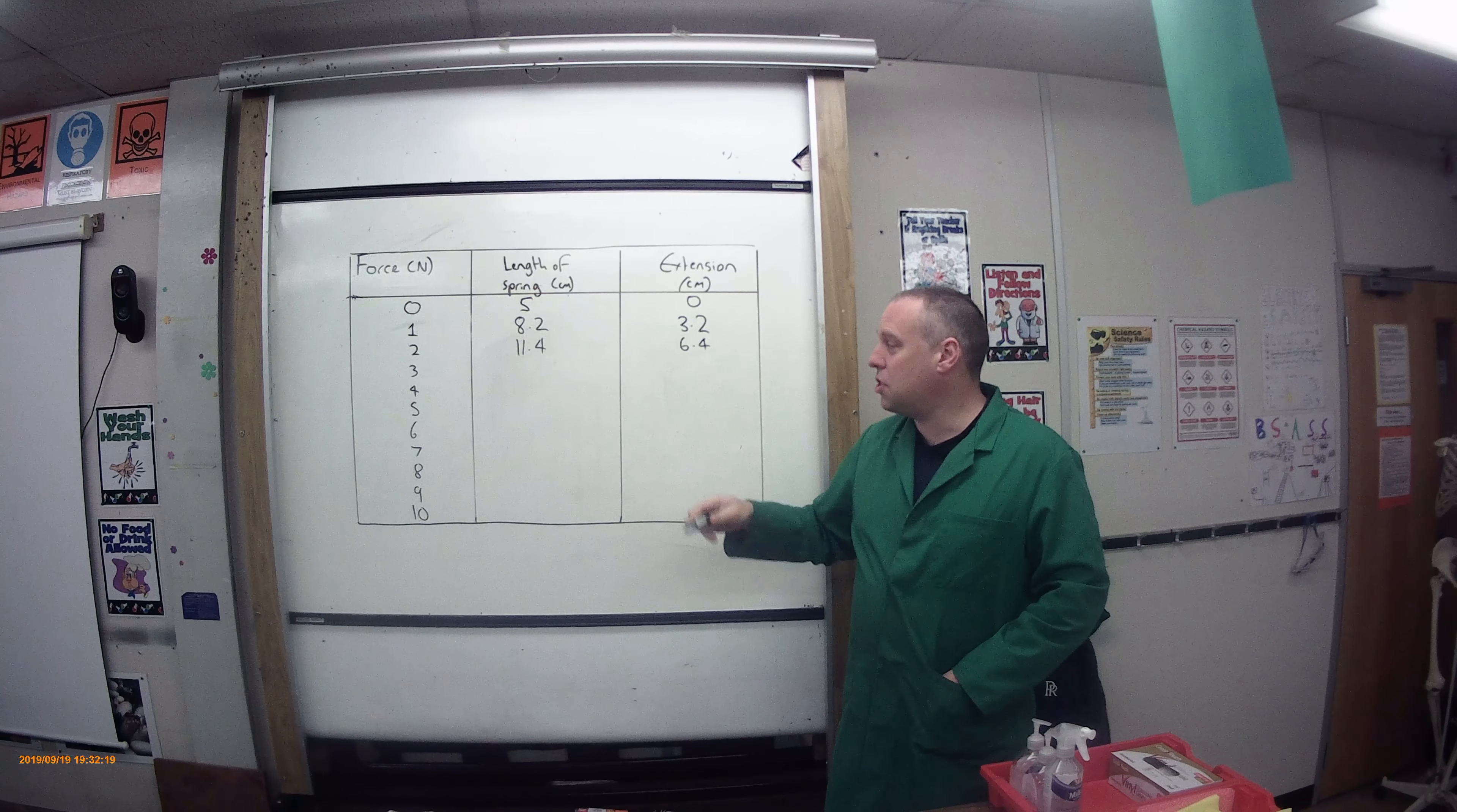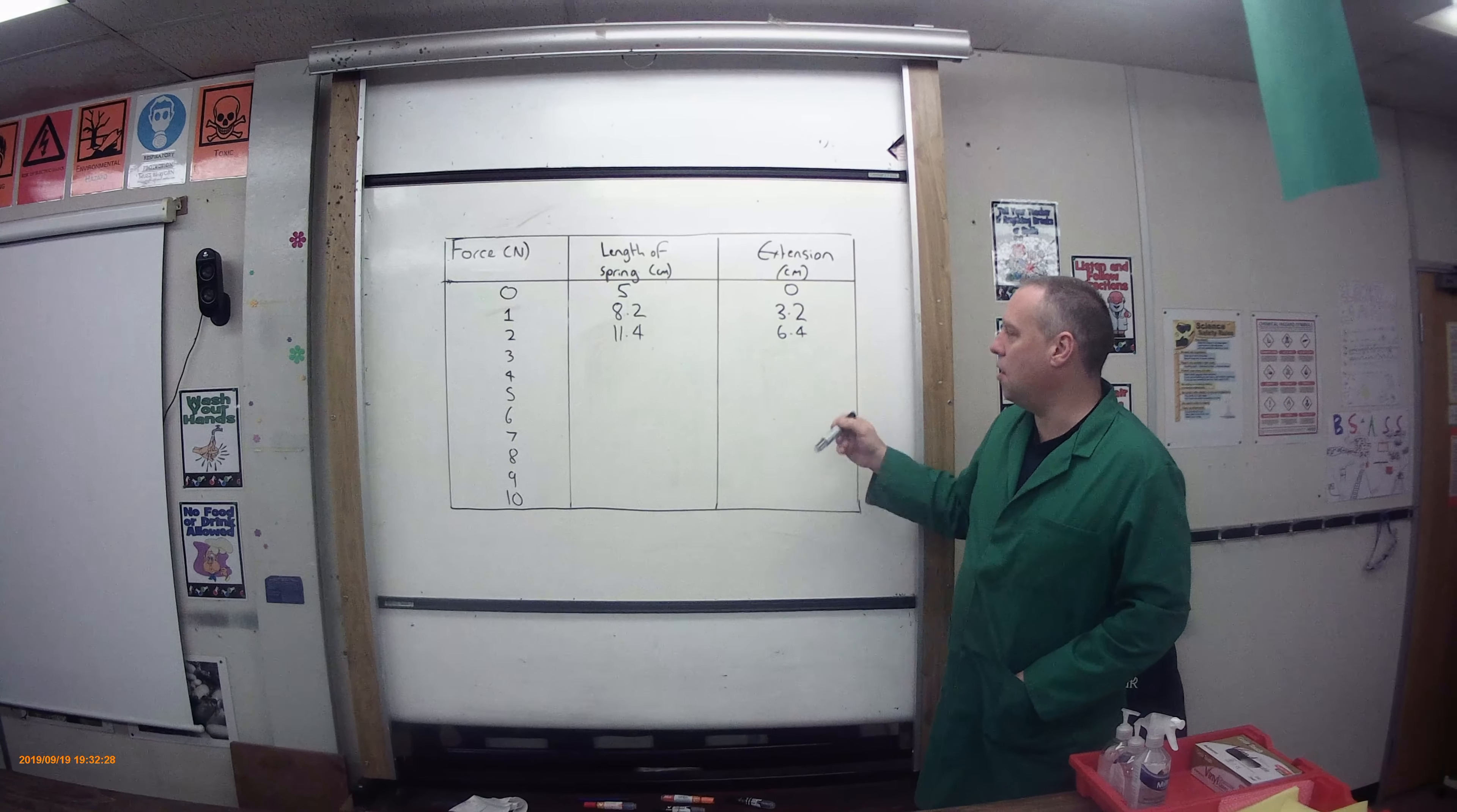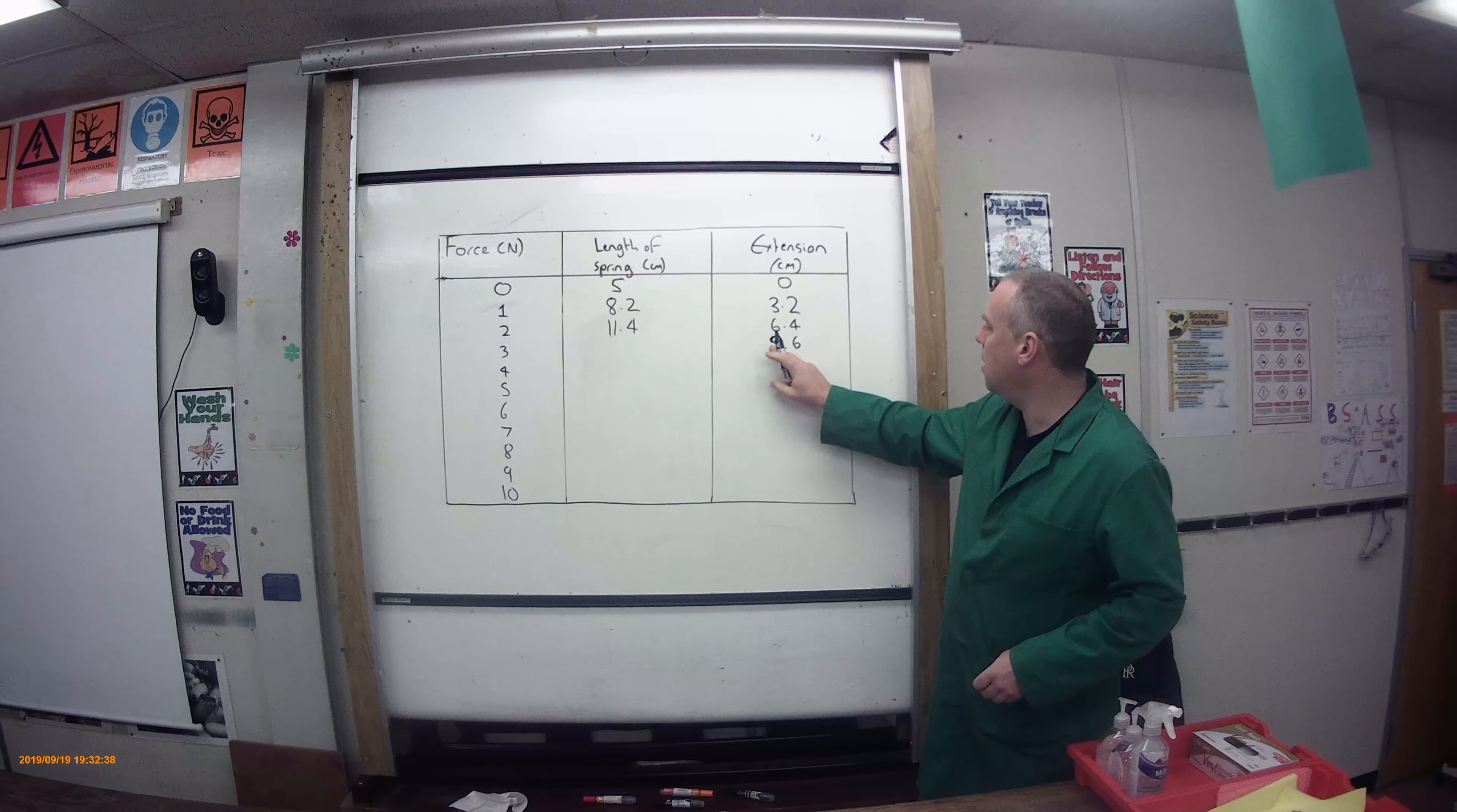So each time I put a newton's worth of force on, I extend it by the same amount. We can start predicting. My extension for 3 newtons should be 9.6. Let's try that.